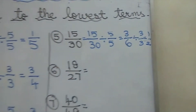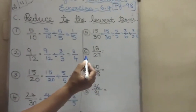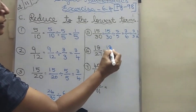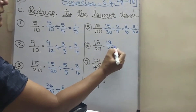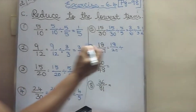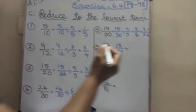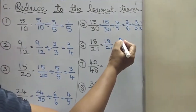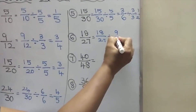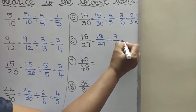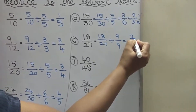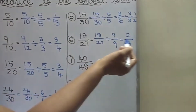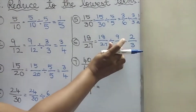Do it carefully. Next one: 18 by 27. It goes in what table? It goes in 9 table: 9 by 9. 9 2s are 18 and 9 3s are 27. You can't divide it again — this is the lowest term.